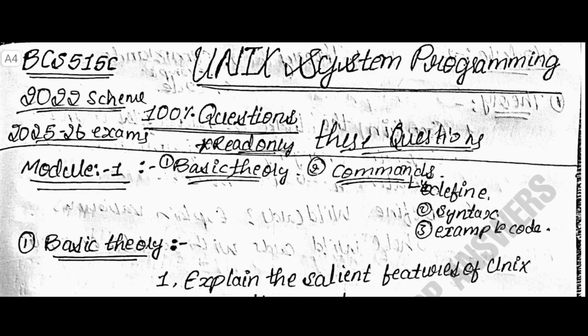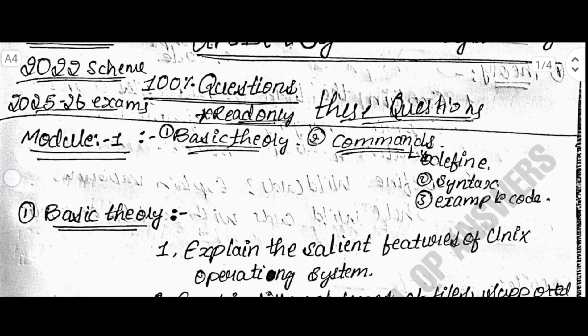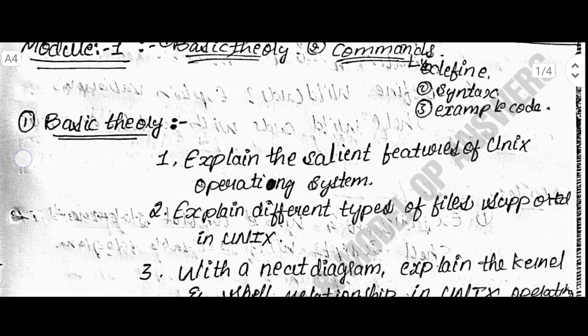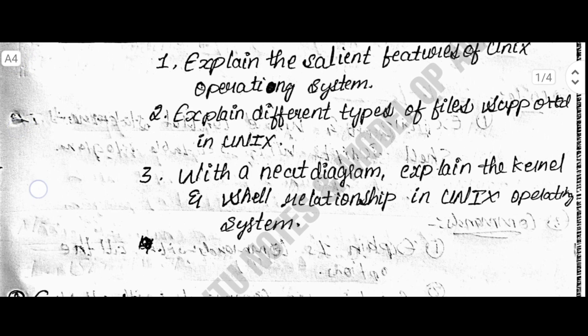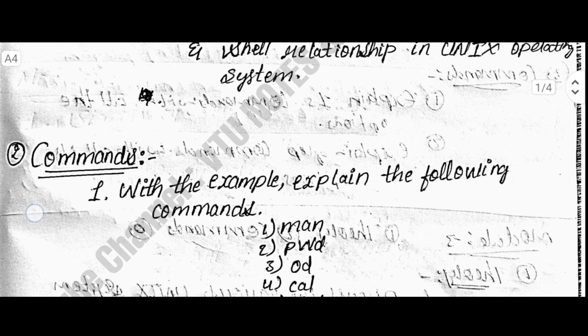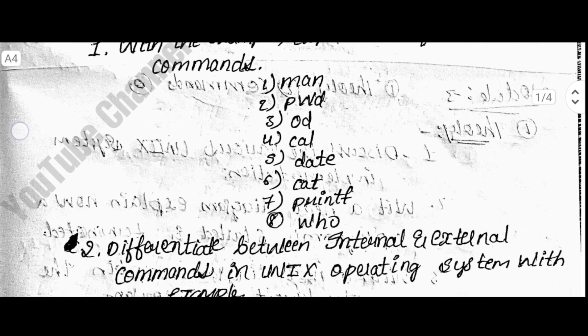Listen carefully. In order to pass UNIX system programming BCS-515C or even score 90 plus, follow this simple and realistic approach. Main points to remember: firstly, this paper is all about UNIX operating system.